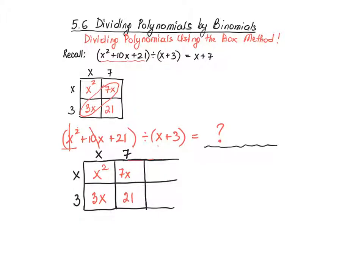Now I compare what I see inside of my box to what I see in my dividend. Do I have x squared? Yes, I do. Do I have 10x? Yes, I do. Do I have 21? Yes, I do. I fit my entire expression inside of the box. And in the process, I revealed that the missing factor is x plus 7.